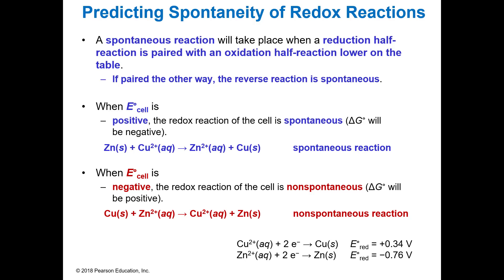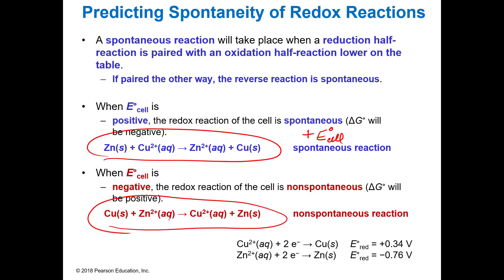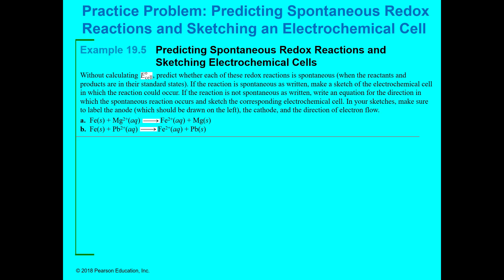If the E°cell is positive then ΔG will be negative and the reaction will be spontaneous. If the E°cell is negative then ΔG will be positive and it will be non-spontaneous. Notice: a reaction with a positive E°cell is spontaneous, and the reverse of that reaction is non-spontaneous because flipping it gives a negative E°cell. When you reverse it, electrons are no longer going from anode to cathode but cathode to anode, so it won't be spontaneous.